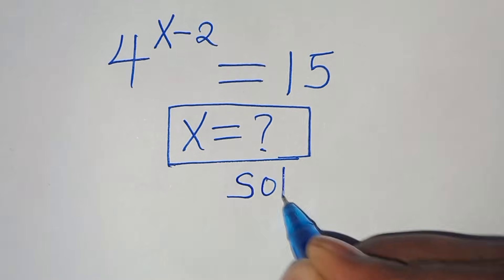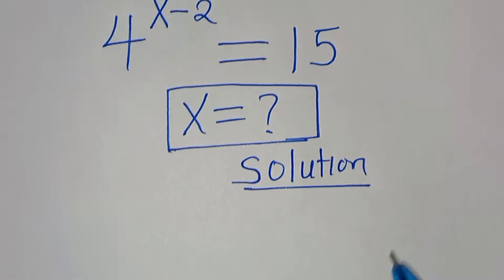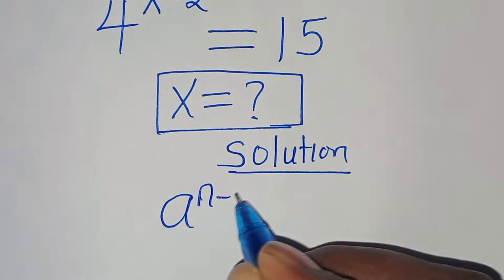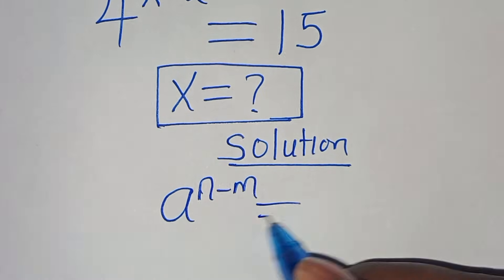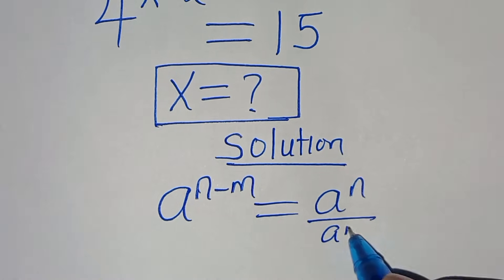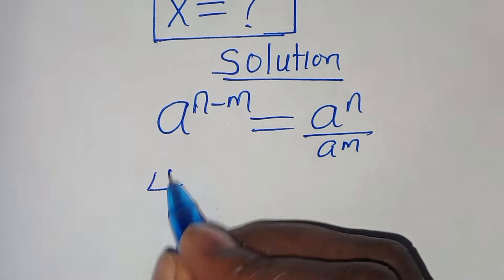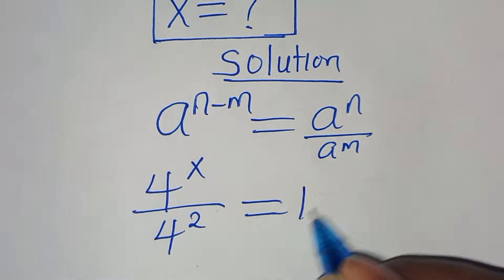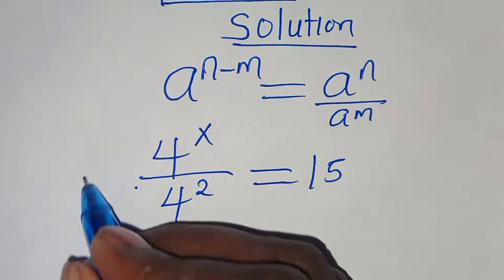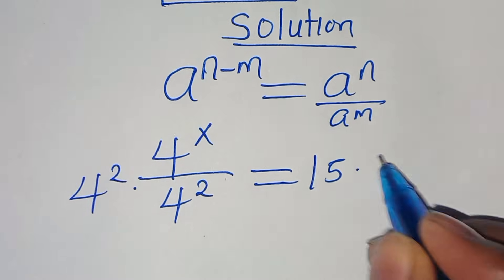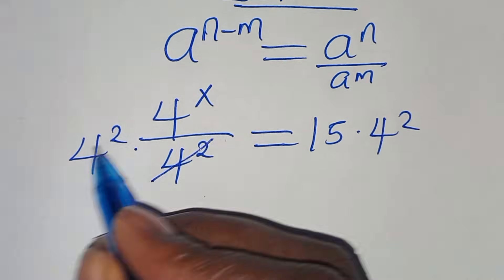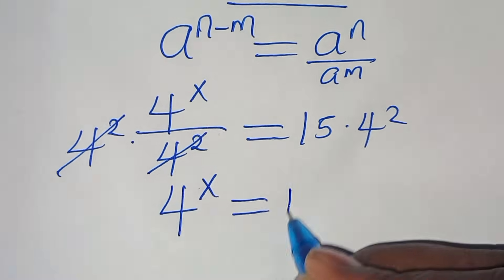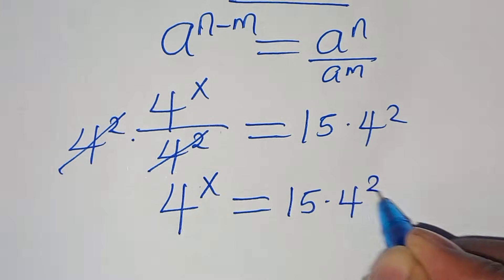Now let's provide a solution. This exponential equation is in the form of a to the power of n minus m, which we can express as a to the power of n divided by a to the power of m. So we have 4 to the power of x divided by 4 to the power of 2, and this is equal to 15. Now let's multiply both sides by 4 to the power of 2, so that 4 to the power of 2 simplifies, giving us 4 to the power of x equals 15 multiplied by 4 to the power of 2.